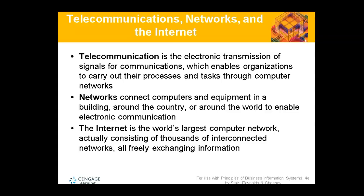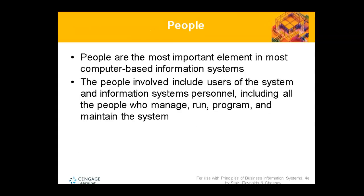Computers are connected to Wi-Fi, so those are telecommunications — connected in electrical ways. Networks are connected computers and equipment in a building. The internet is probably one of the largest ways in which computer networks are established. Fiber cables travel undersea — there are many ways in which internet is provided to people.